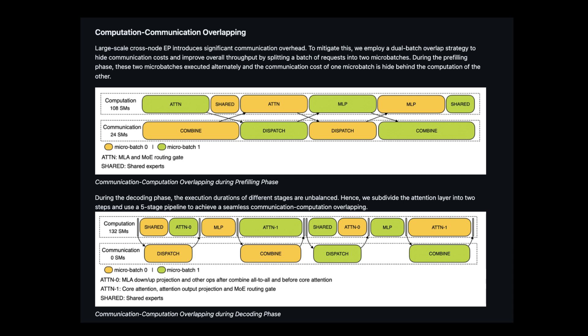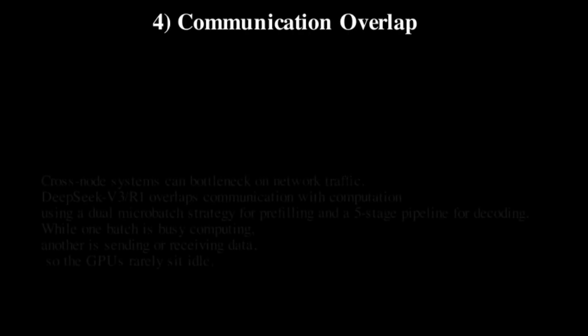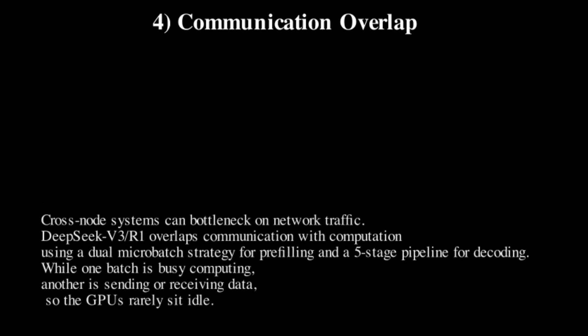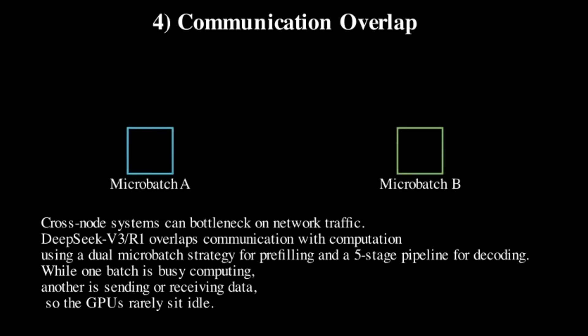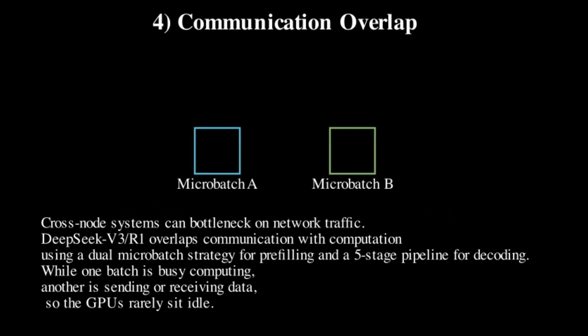DeepSeek R1 addresses this through computation-communication overlap. At the pre-filling stage, they use something called dual micro-batching: they split each batch of tokens into two micro-batches, where micro-batch A is computing while micro-batch B is communicating — sending or receiving data. This approach keeps the GPUs busy constantly.